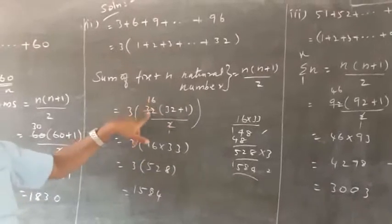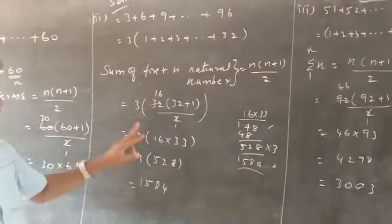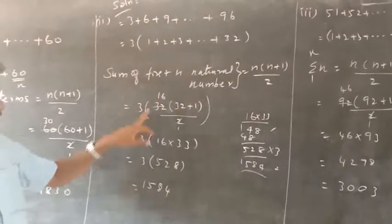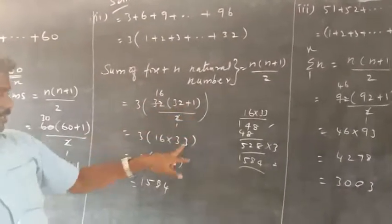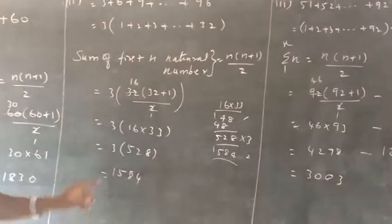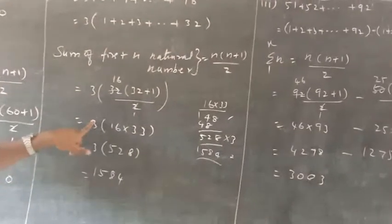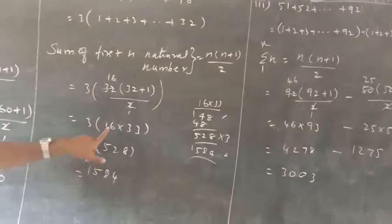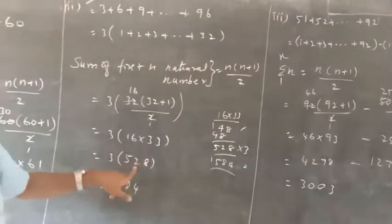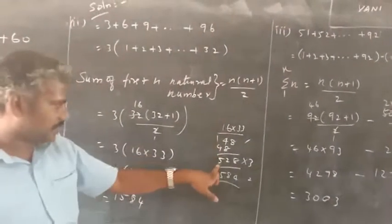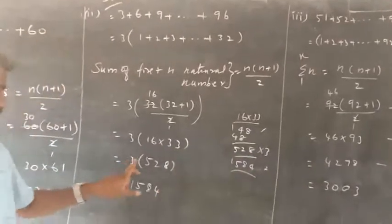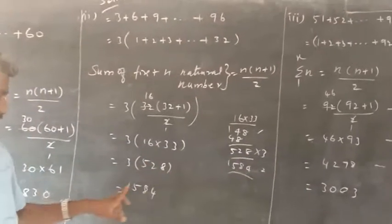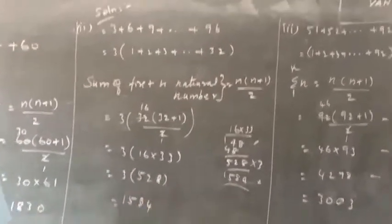2's are 32, so 3 into 16 into 32 plus 1 is 33. So 16 into 33 multiplication is 528. So 3 into 528 equals 1584.